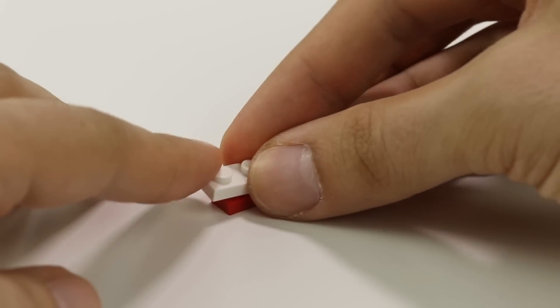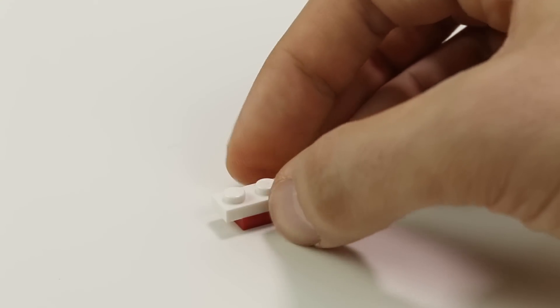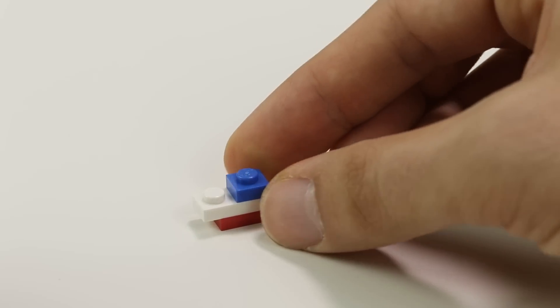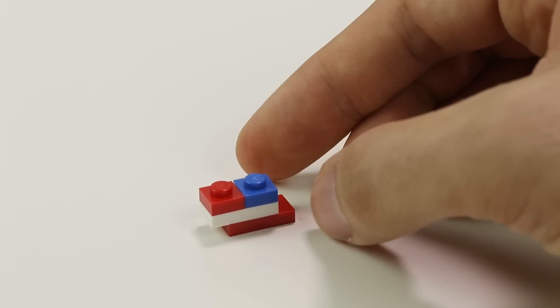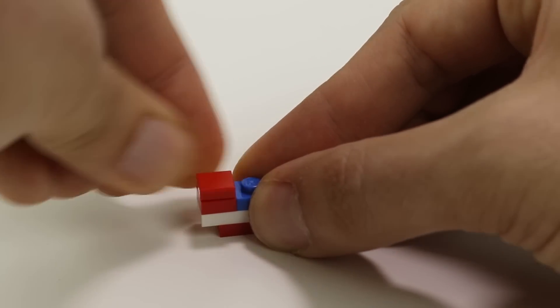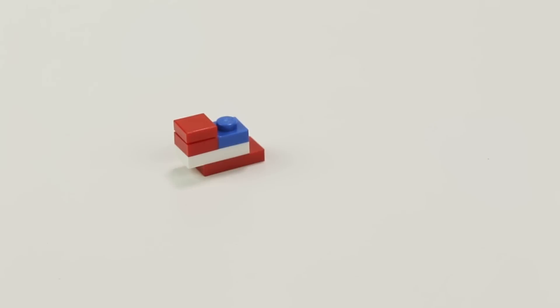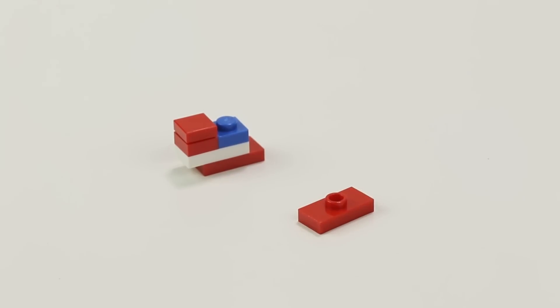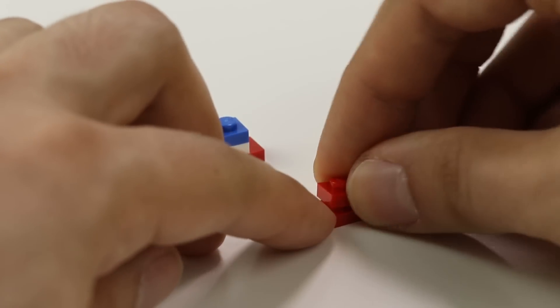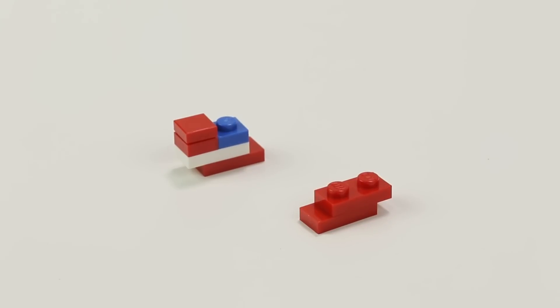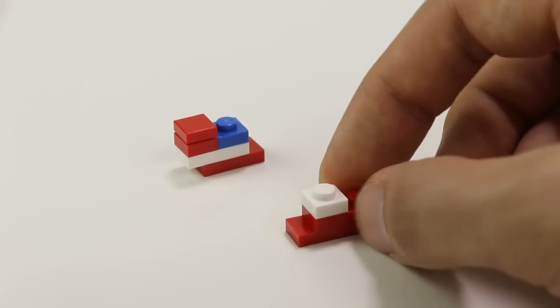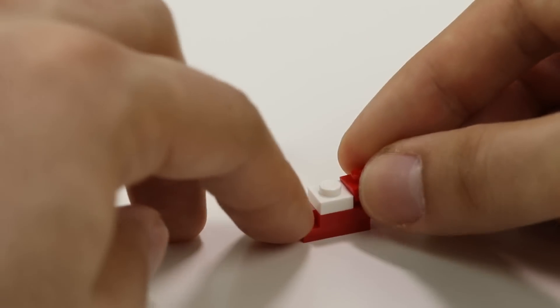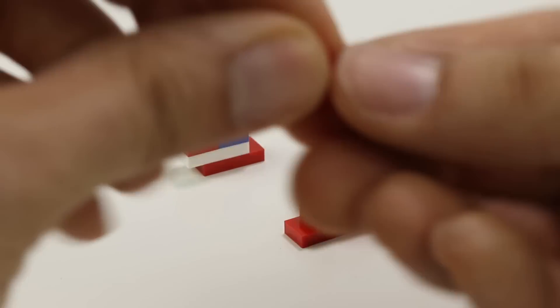Here we are at leg shape number four. I'm going to start with a 1x2 red offset plate. I'm going to put a 1x2 white plate on top of that. Then a 1x1 blue and a 1x1 red, and then a 1x1 red tile. That's half of this leg shape. The other half will also start with a 1x2 red offset plate, putting a 1x2 red plate on top of that, and then a 1x1 white plate, a 1x1 red plate, and a 1x1 red tile.